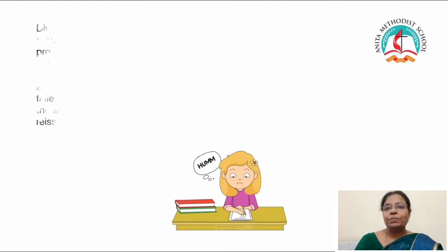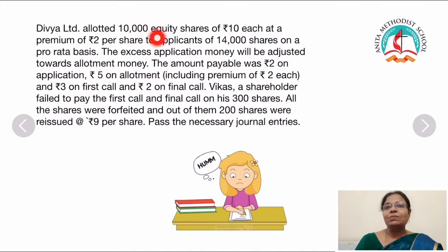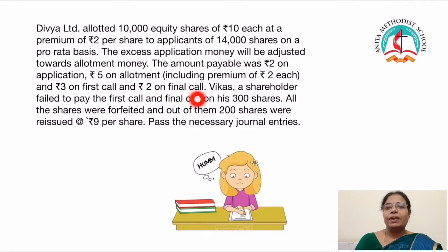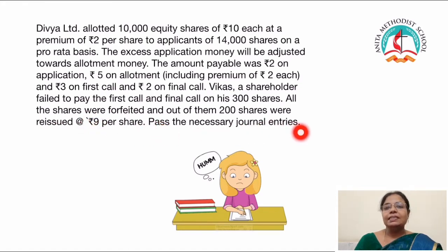Children, let us do one problem. Divya Limited allotted 10,000 equity shares of rupees 10 each at a premium of rupees 2 per share to applicants of 14,000 shares on a pro-rata basis. The excess application money will be adjusted towards allotment money. The amount payable was rupees 2 on application, rupees 5 on allotment including premium of rupees 2 each, and rupees 3 on first call and rupees 2 on final call. Because a shareholder failed to pay the first call and final call on his 300 shares, all the shares were forfeited and out of them 200 shares were reissued at rupees 9 per share. Pass the necessary journal entries.